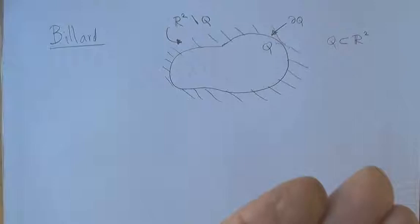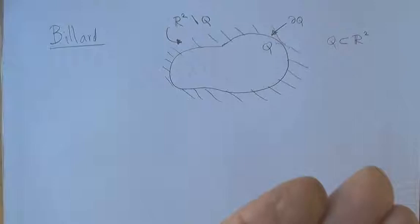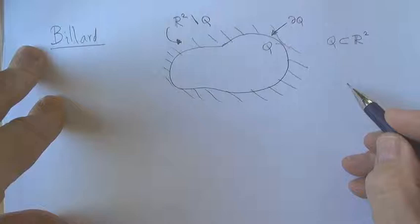So that's the domain Q. And in this case, the billiard is bounded. It could also be infinite extent.